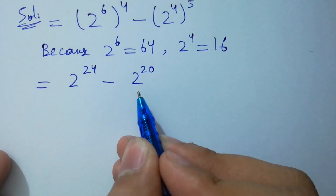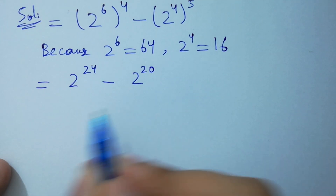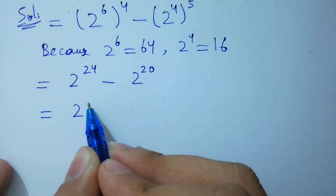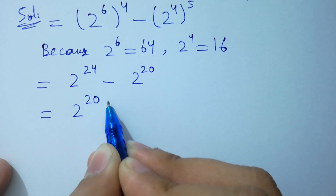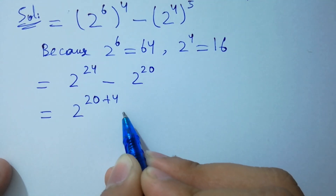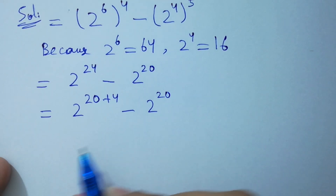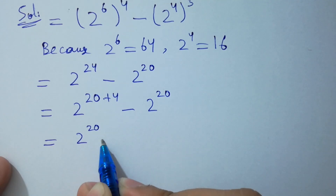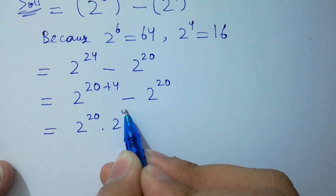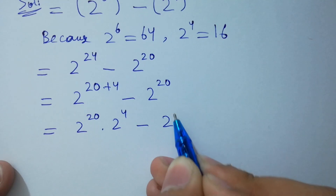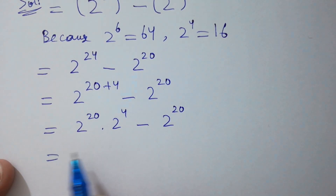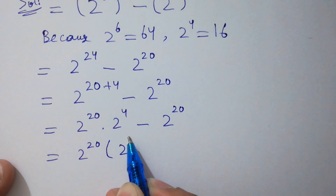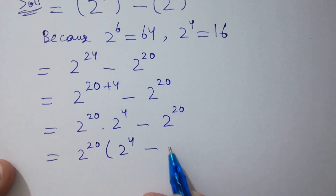In the next step, we take out the common factor 2 to the power 20. It can be written as 2 to the power 24 plus 4 minus 2 to the power 20, which gives us 2 to the power 20 times 2 to the power 4 minus 2 to the power 20. Taking 2 to the power 20 as common, we have 2 to the power 4 minus 1.